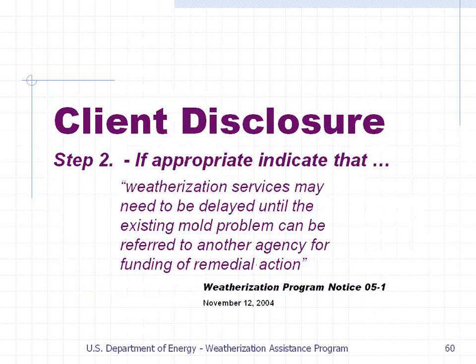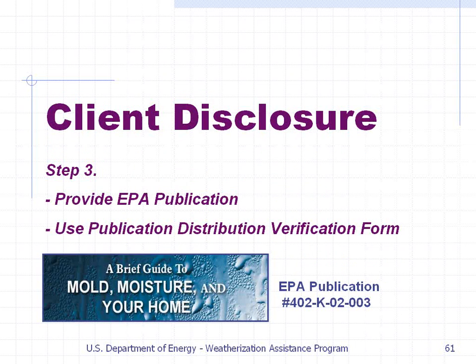Step 2: if appropriate, indicate that weatherization services may need to be delayed until the existing mold problem can be referred to another agency for funding of remedial action. Step 3: provide the EPA publication using the publication distribution verification form. The main publication used is A Brief Guide to Mold, Moisture in Your Home — EPA publication number 402-K02-003.